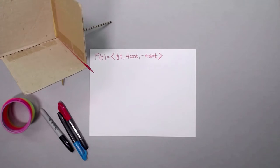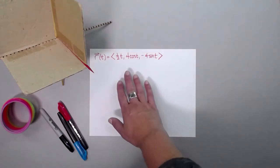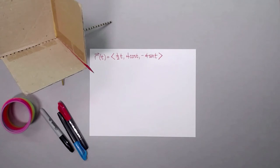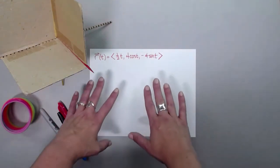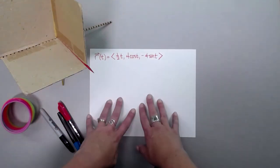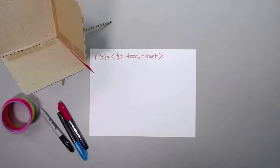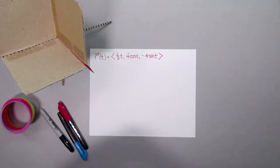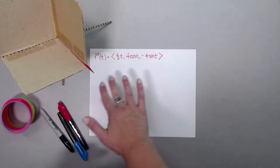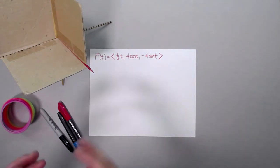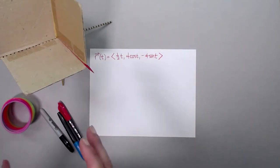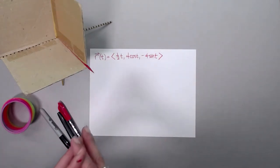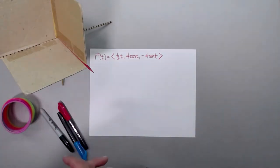In this video, we're going to look at graphing the space curve generated by a vector-valued function. We're going to talk about how to draw that by hand. The more of these that you do, the better you'll get at recognizing the shape and being able to do a rough sketch without needing to think about it too hard.